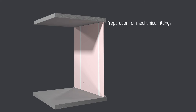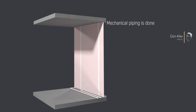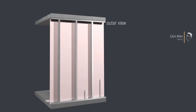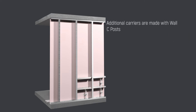Preparation for mechanical fittings is done. Mechanical piping is carried out and fixed with mortar. Mechanical fittings are fixed. Additional carriers are made with wall C posts.